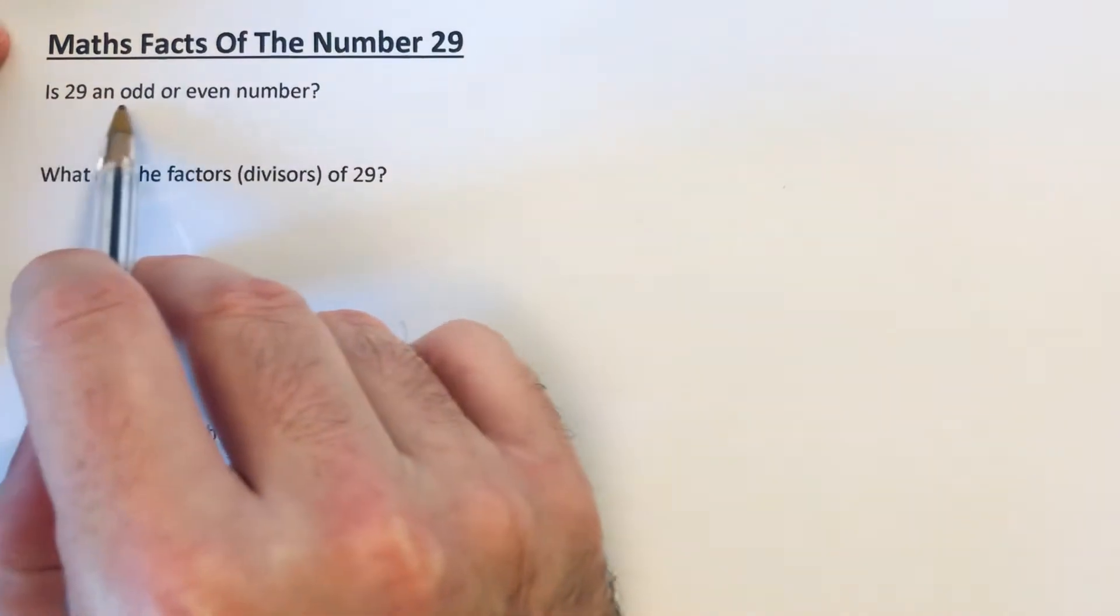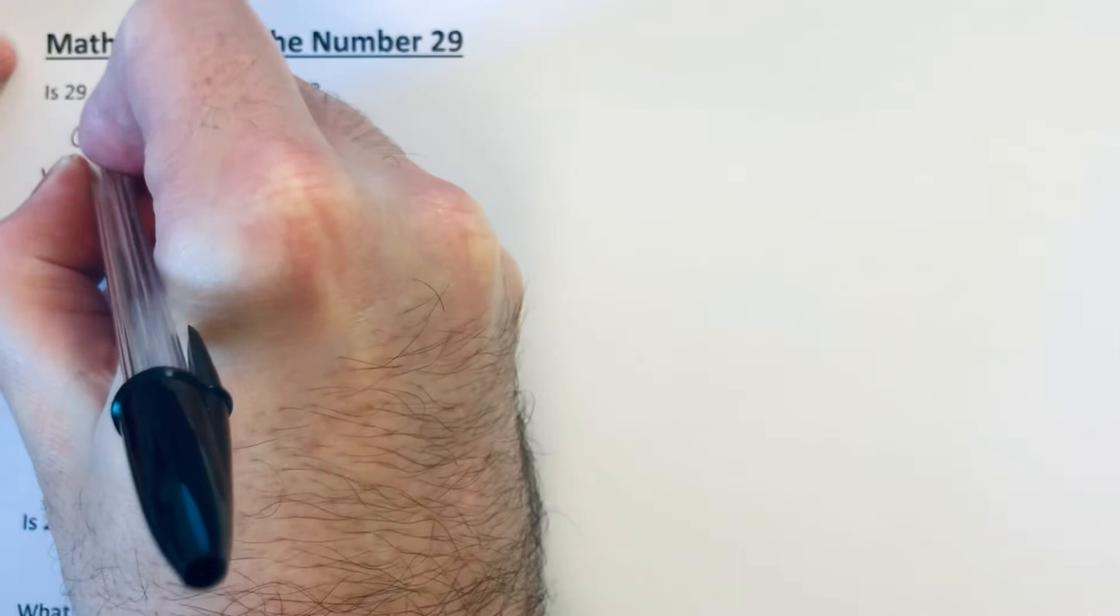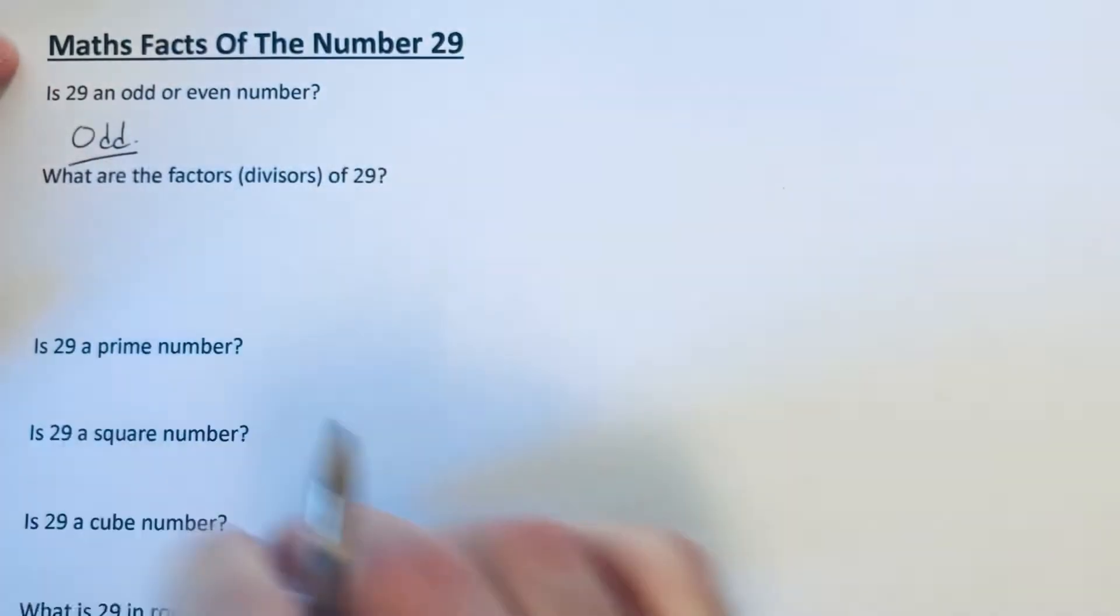So first up then, is 29 an odd or even number? Well, 29 is an odd number because it is not in the 2 times tables.